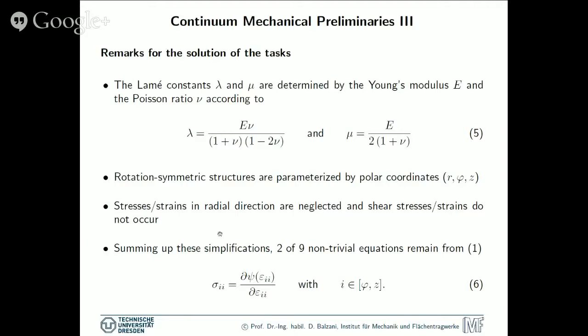Then we have neglected stresses and strains in radial direction and the shear stresses are neglected and strains. So this simplifies the whole problem significantly such that basically we end up with two out of the nine non-trivial equations that arise from this derivative expression. So in index notation we have this formula where I is either phi or Z. So we have basically two equations left. One for calculating the normal stress in circumferential direction, that would be sigma phi phi, or in an abbreviated notation where we skip the double indices would be sigma phi, which is then the derivative of psi with respect to epsilon phi. And for the axial direction, we have the normal stress sigma z equal to d psi with respect to d epsilon z.